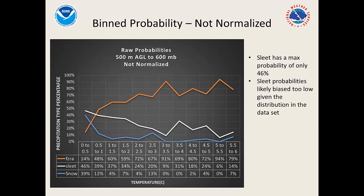Looking at the actual probabilities for the unnormalized case: for the 0 to 0.5°C bin, taking all cases with a warm nose in that range — snow, sleet, and freezing rain — 39% were snow, 46% were sleet, and 14% were freezing rain. You can see how those ratios shift across bins. Sleet's probability is likely biased too low in this version given the distribution imbalance in the dataset, which is where normalization comes in.